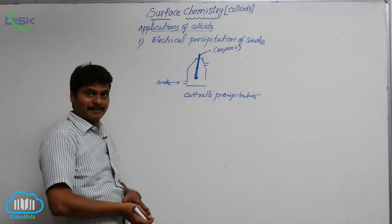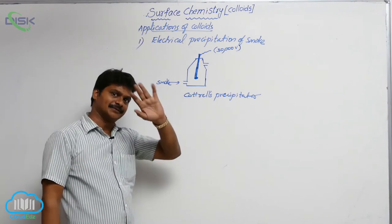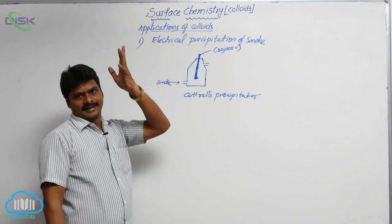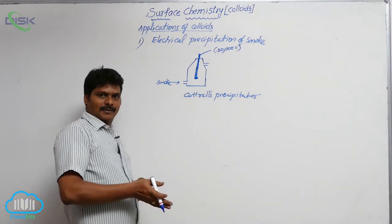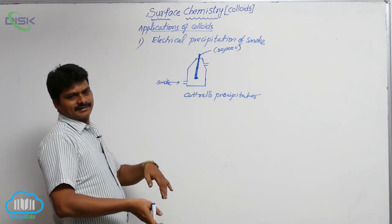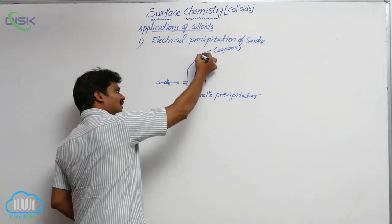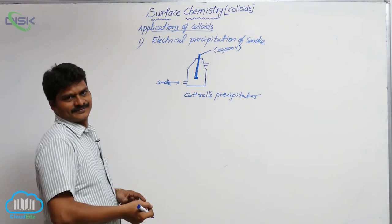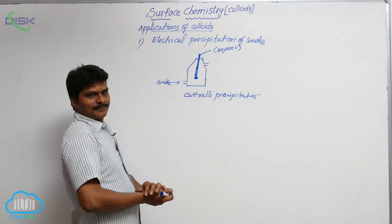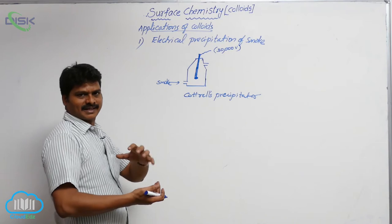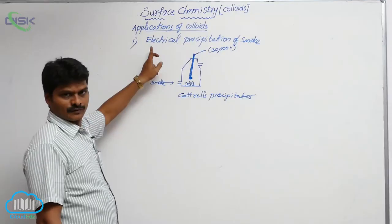The smoke must be passed into this Cottrell's precipitator chamber. If the smoke is released directly from the chimney, the dust particles enter the atmosphere and pollute it. That's why before release, the smoke is first sent into a chamber where oppositely charged electrodes or plates are present. When smoke comes into contact with these plates, the dust particles present in the smoke get coagulated.